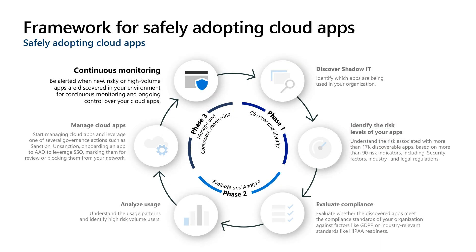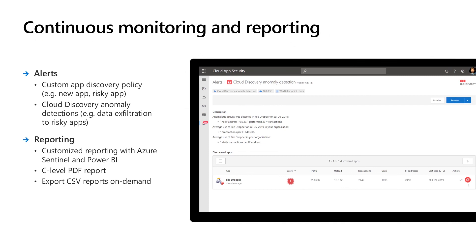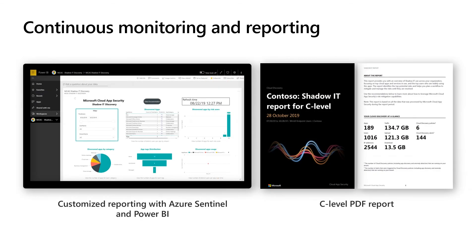The last step in our framework is to create a continuous monitoring process. Make sure to be alerted on newly discovered apps and unusual high-volume usage. We're working continuously to enhance reporting through alerts on anomalous traffic and custom-made policies to alert on new app usage based on any app characteristics. We also provide built-in and customized reporting capabilities by integrating with Azure Sentinel and Power BI for custom reporting, and providing out-of-the-box C-level PDF reports and CSV exports of all discovered apps on demand.